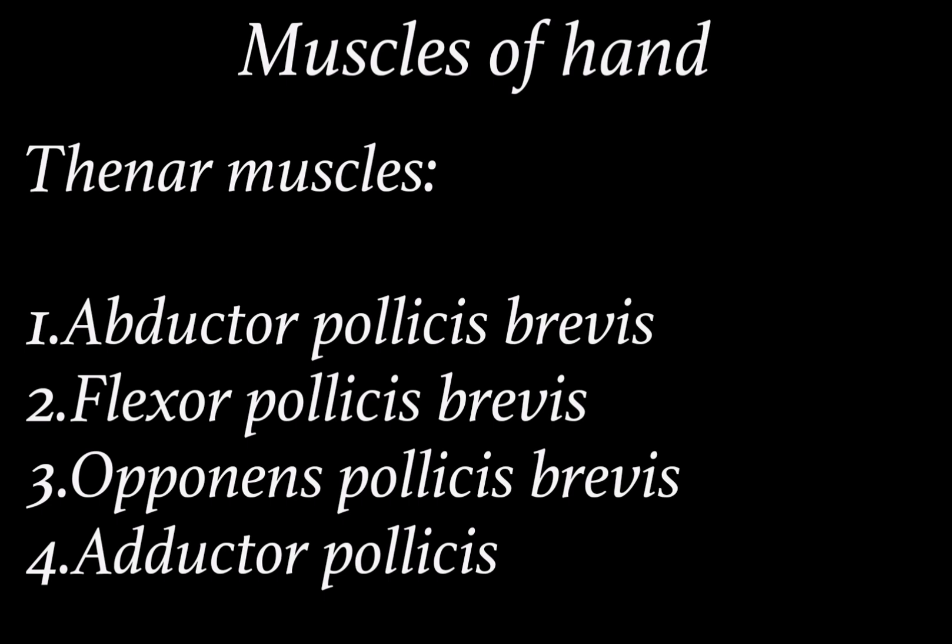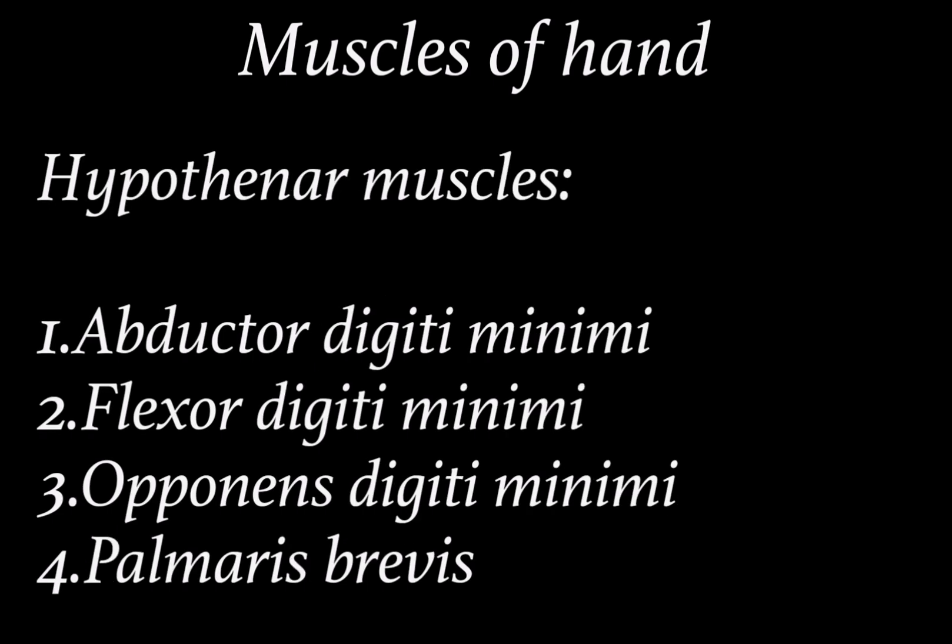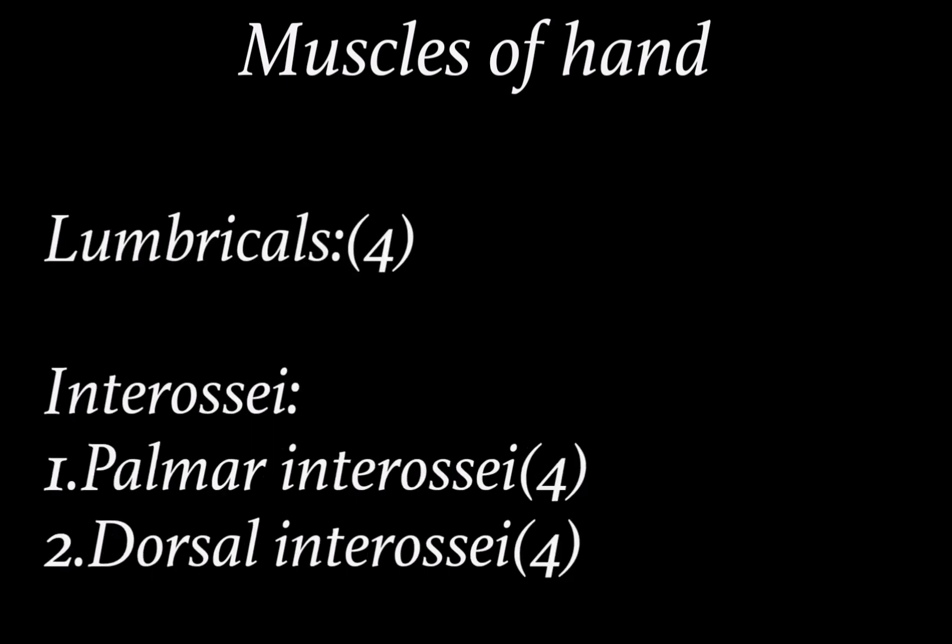There are four thenar muscles as well as four hypothenar muscles, which are abductor digiti minimi, flexor digiti minimi, opponens digiti minimi, and palmaris brevis. Besides that, we have four lumbricals: lumbrical 1, 2, 3, and 4. Interossei muscles are divided into palmar and dorsal interossei, with four palmar interossei and four dorsal interossei, giving a total of 20 muscles of the hand.